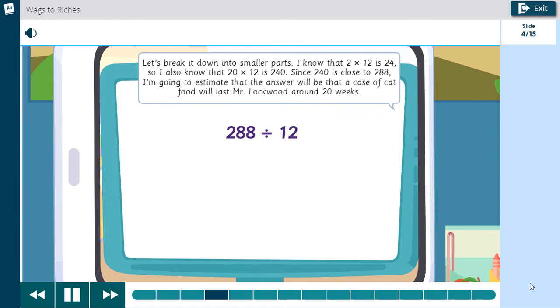Let's break it down into smaller parts. I know that 2 times 12 is 24, so I also know that 20 times 12 is 240. Since 240 is close to 288, I'm going to estimate that the answer will be that a case of cat food will last Mr. Lockwood around 20 weeks.